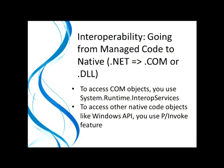Another important feature of the .NET Framework is interoperability. This involves when you have to go outside the framework — how do you get from .NET to something outside the framework like a COM module or a DLL. For COM modules, you use interop services, which put a wrapper around the COM module and allow you to access it through a type-safe wrapper. If you're trying to access other native objects like the Windows API, you can use the pInvoke feature, which imports the DLL inside the .NET Framework and puts the parameters on a stack, allowing you to work with them through that technique.